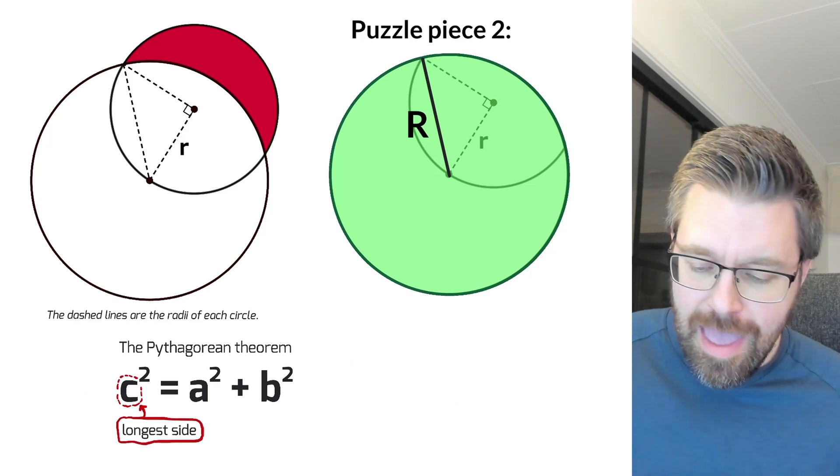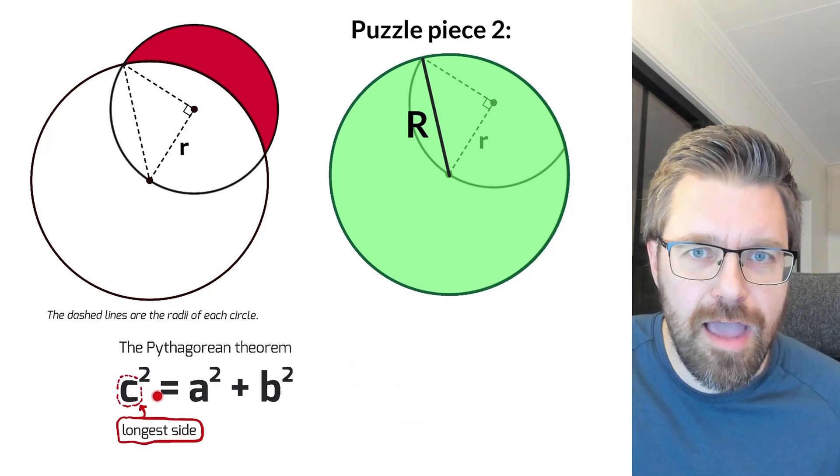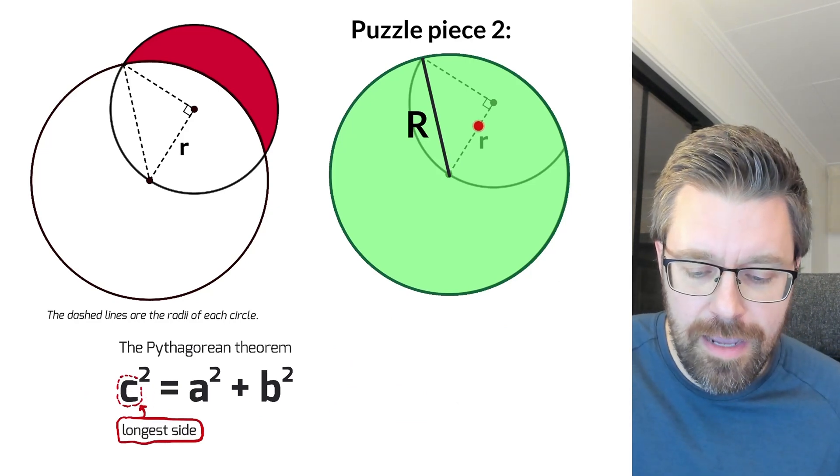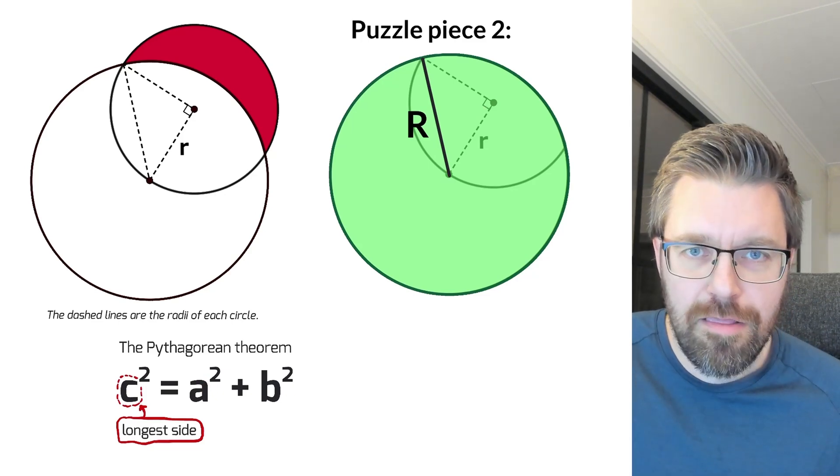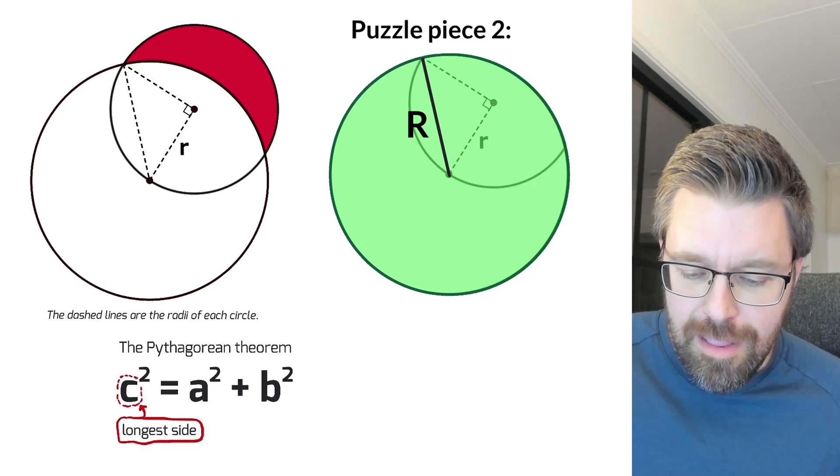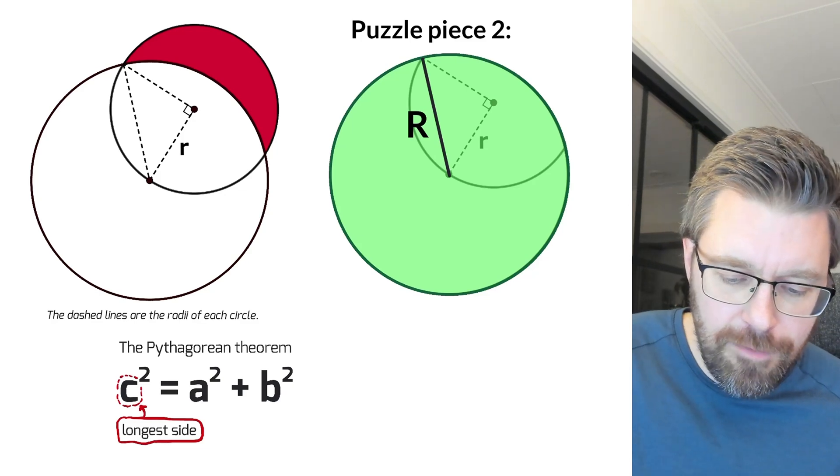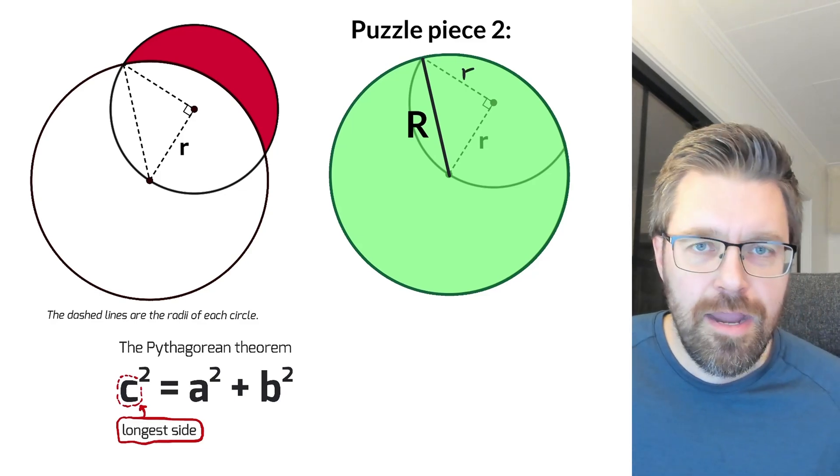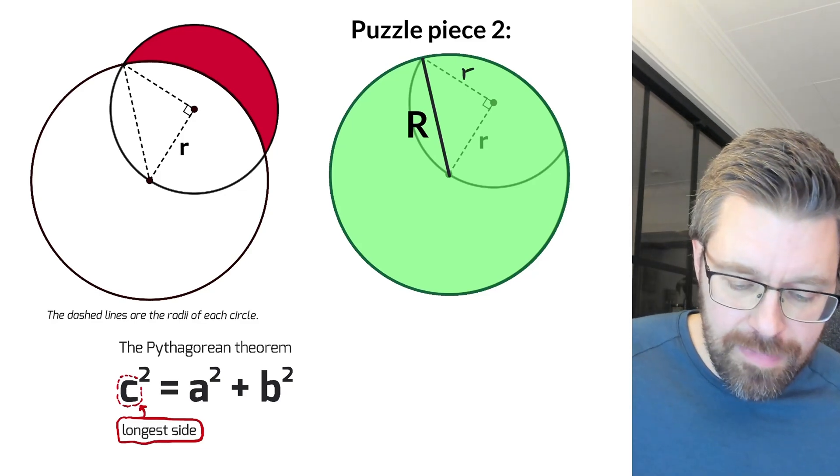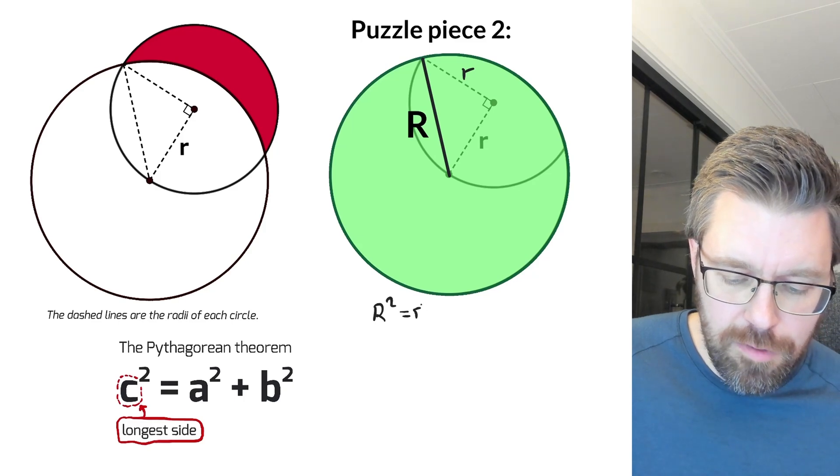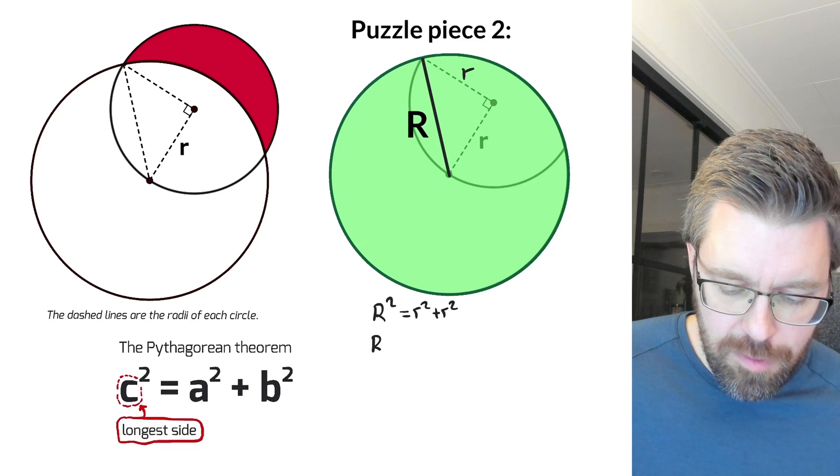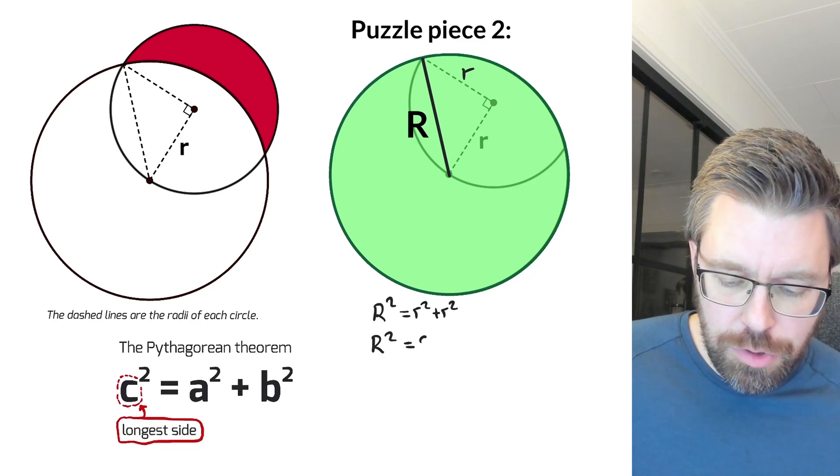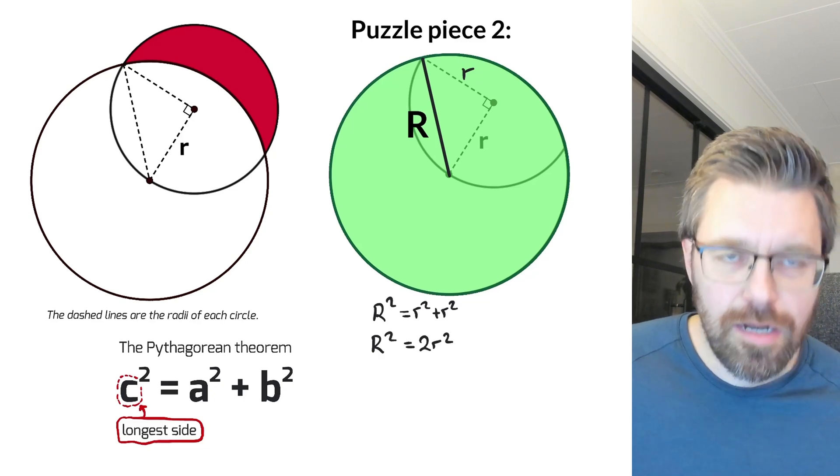You have seen it before. And if you square the longest side in a right triangle, like the right triangle we have here, it is the sum of the squares of the shorter sides. And we have r and we have little r even here. So it tells me that R squared equals little r squared plus little r squared. So R squared equals two times little r squared.